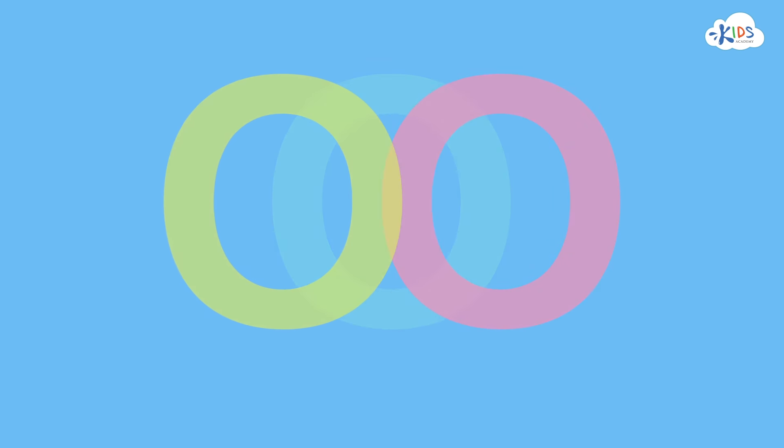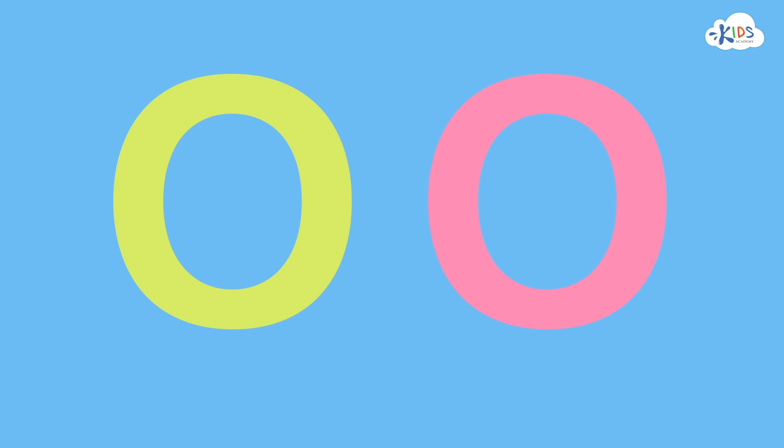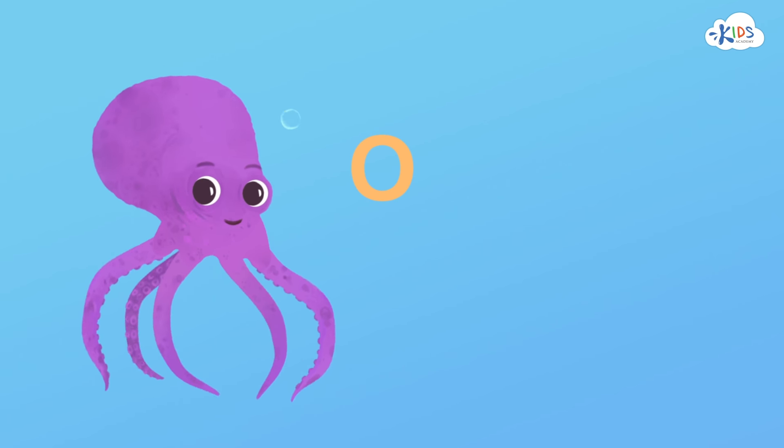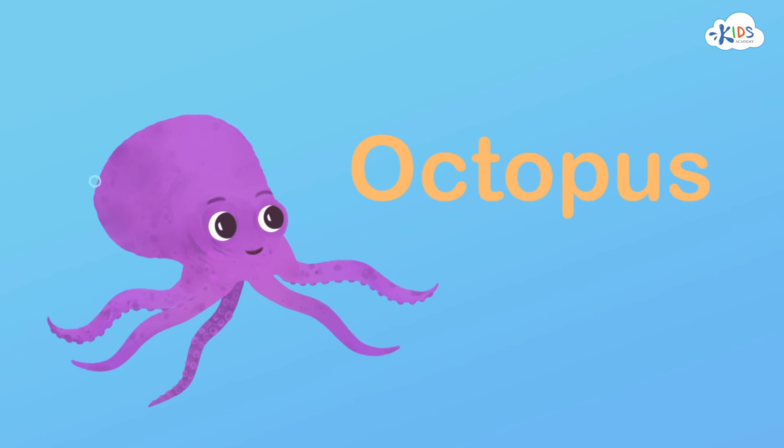O makes two different sounds. Sometimes it says, Ah, ah, ah, like ah, octopus.